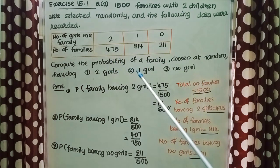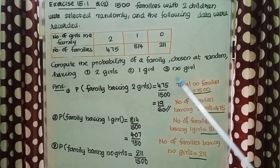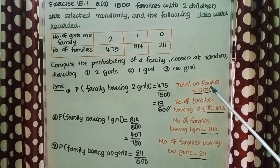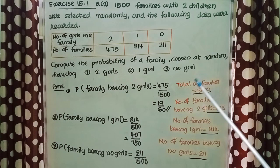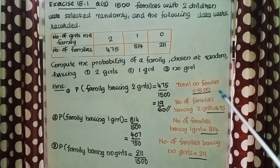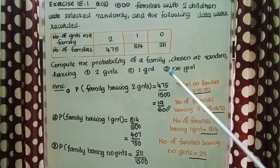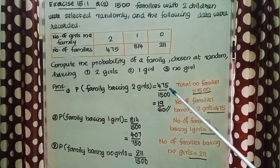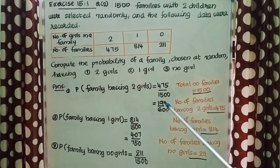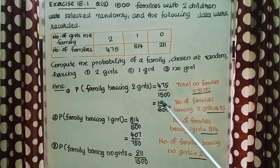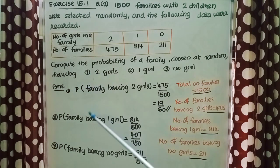First: probability of a family having 2 girls. Total number of families = 1,500. Number of families having 2 girls = 475. So the probability = 475/1500, which reduces to 19/60.